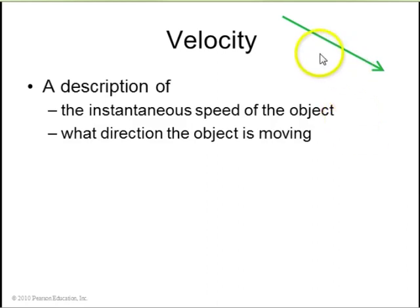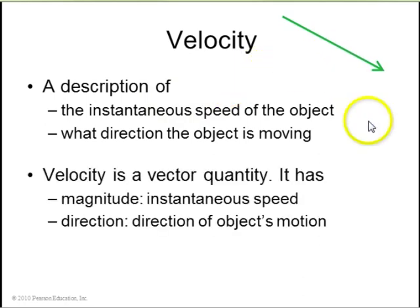Velocity is a description of the instantaneous speed and what direction it's moving. Velocity is a vector quantity. It has a magnitude, which the magnitude of the velocity is called the speed, and it has a direction.